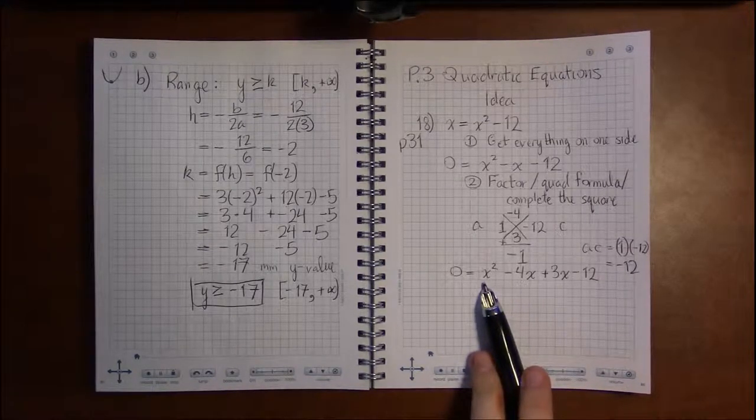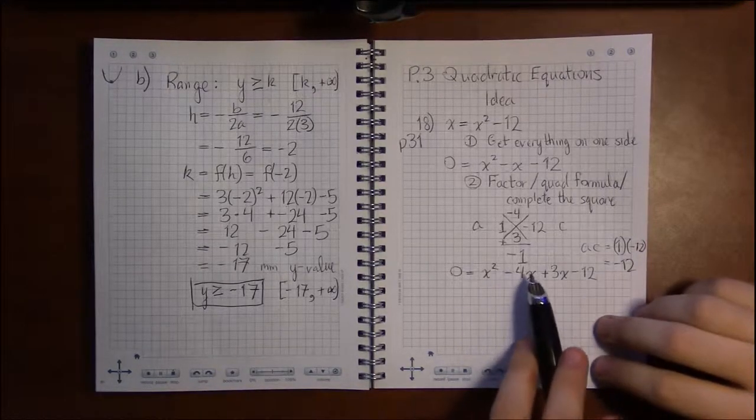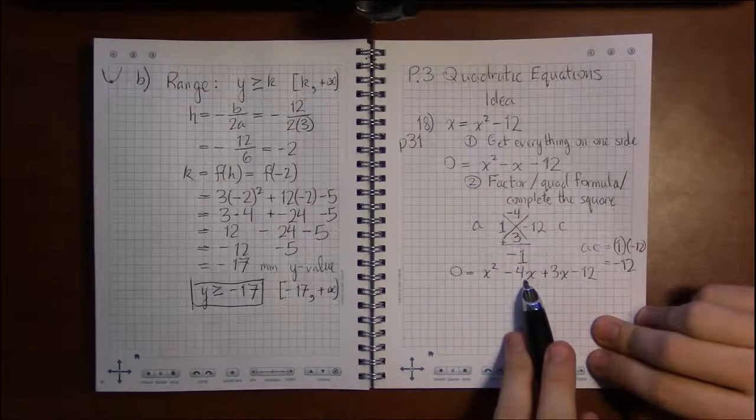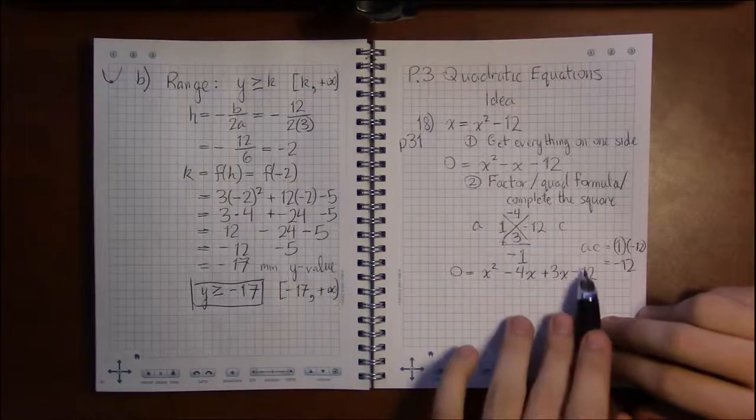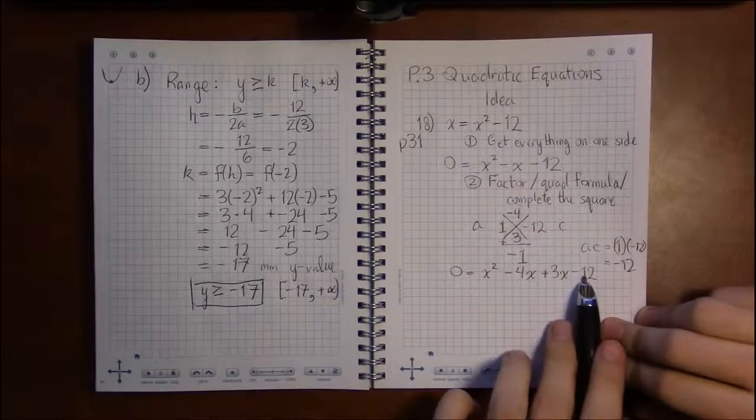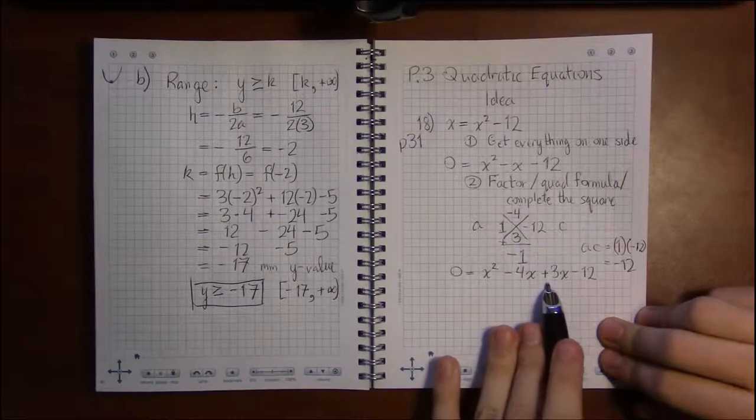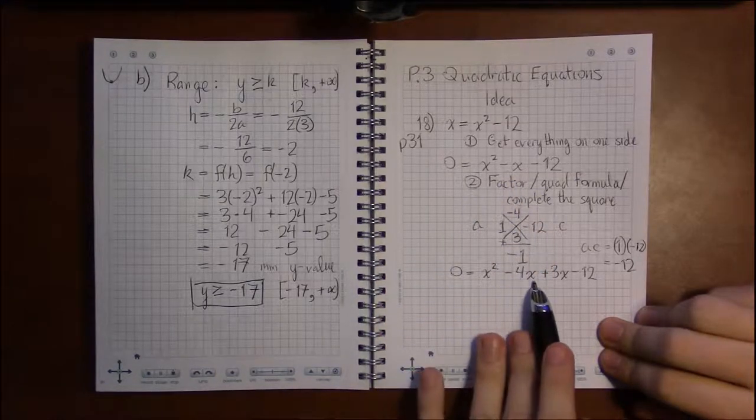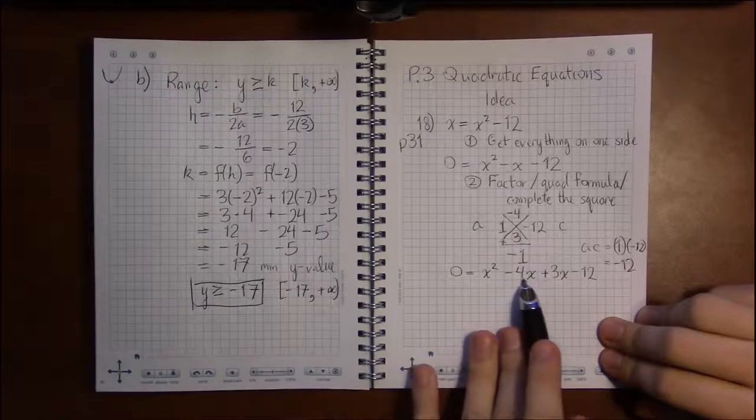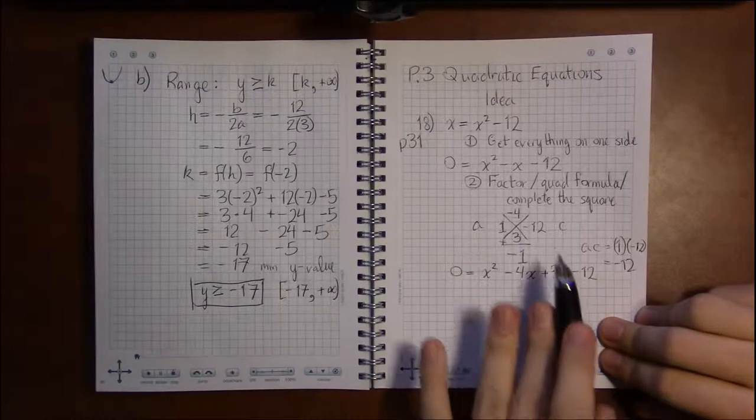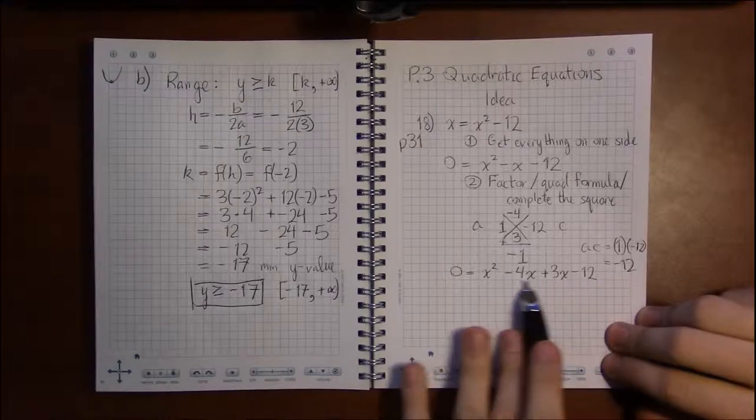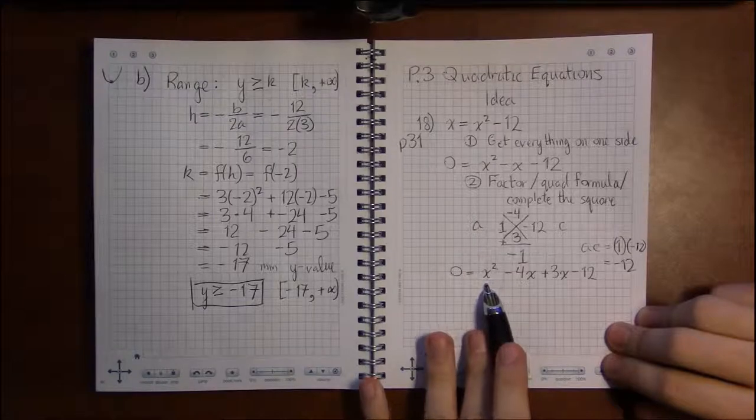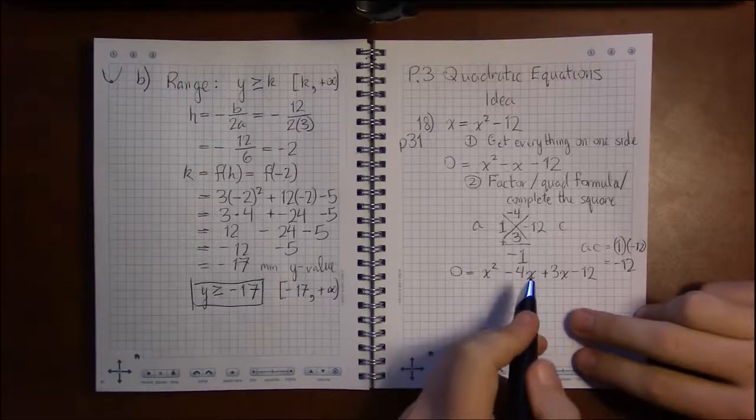Now why in the world would I do that? Well, I'll get to that in a second, but let's make sure we've got the same thing as the line above—let's make sure we're still solving the same equation. The x squared and the minus 12 haven't changed, so there's nothing to worry about there. But minus 4x plus 3x, I claim that's the same thing as minus x, and you can see that if you just add these two like terms together. Minus 4x plus 3x is indeed minus x, so we have the same thing as before. We haven't changed anything; we've just written it in a very funny way.